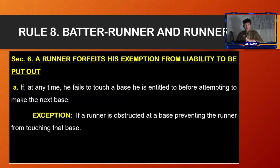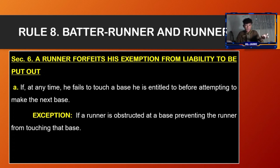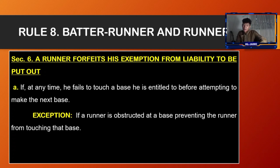Section number six, a runner forfeits his exemption from liability to be put out if at any time he fails to touch a base he is entitled to while attempting to advance to the next base. Exception: if a runner is obstructed at a base preventing the runner from touching that base.